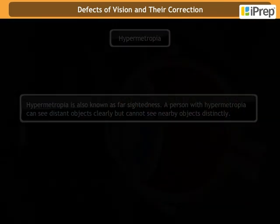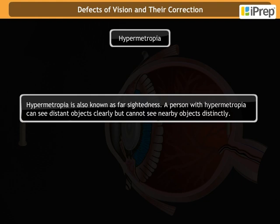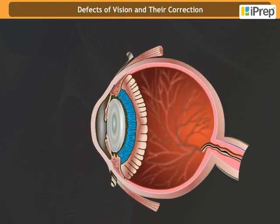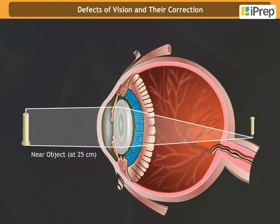Hypermetropia is also known as far-sightedness. A person with hypermetropia can see distant objects clearly but cannot see nearby objects distinctly. The near point for such a person is farther away from the normal near point of 25 centimeters, so they must keep reading material much beyond 25 centimeters from the eye for comfortable reading.